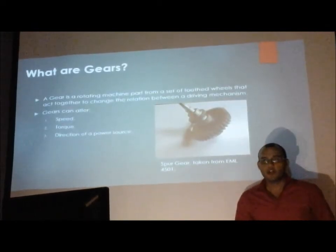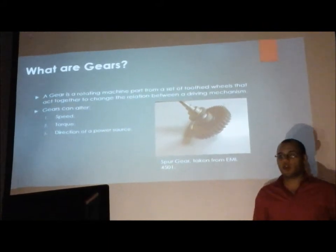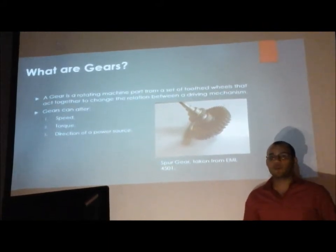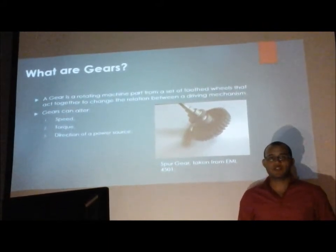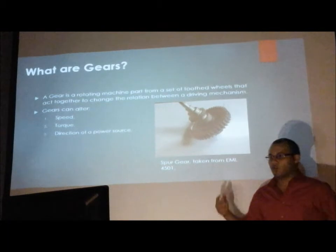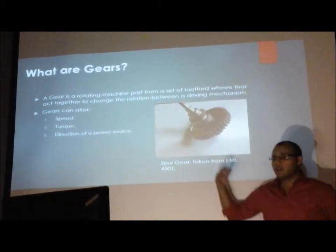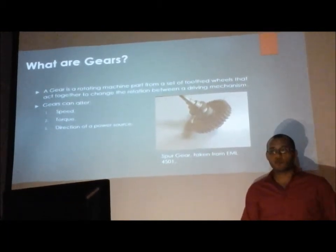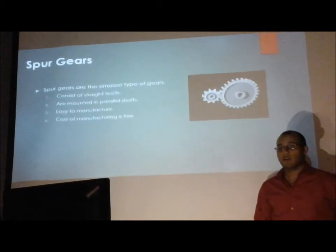What is a gear? A gear is a rotating machine part from a set of two wheels that act together to change the relationship between a driving mechanism. Gears can alter the speed, the torque and the direction of power.